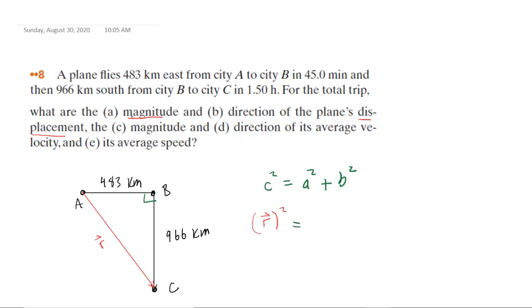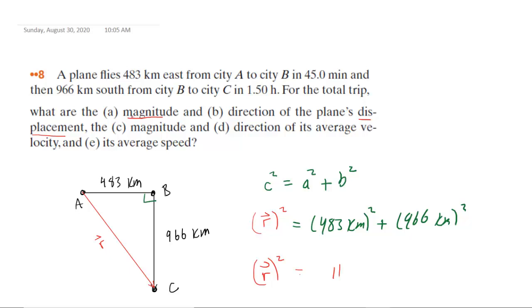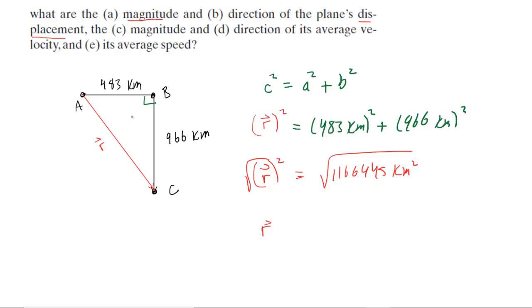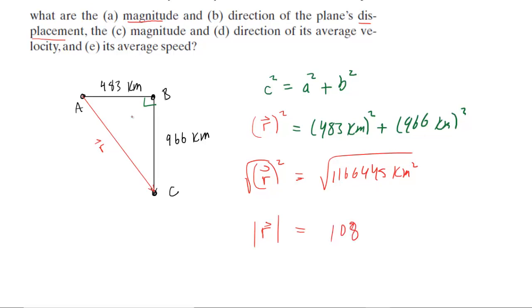R squared equals one leg of the triangle, 483 kilometers squared, plus the other leg, 966 kilometers squared. Pick up your calculator and compute 483 squared plus 966 squared — you get a pretty big number. The displacement magnitude squared equals 1,166,445 kilometers squared. Square root both sides, and the magnitude of the displacement is about 1,080 kilometers. This is the correct answer to part A.